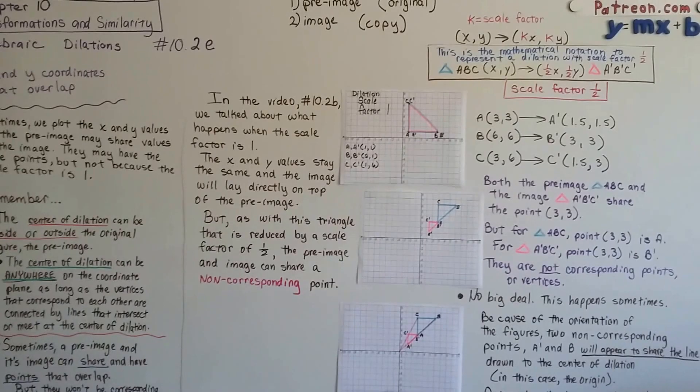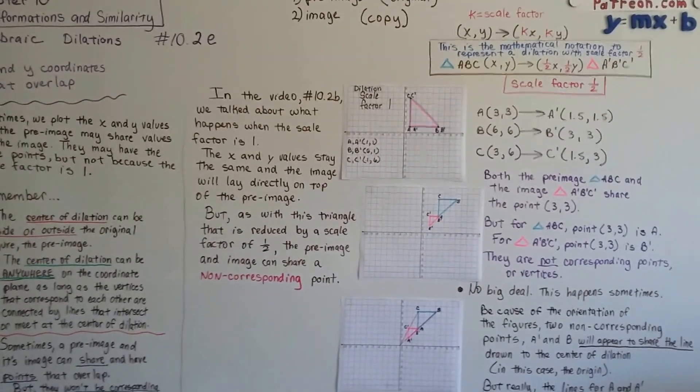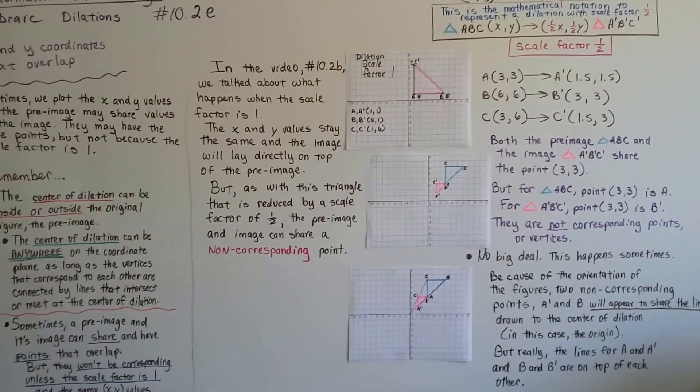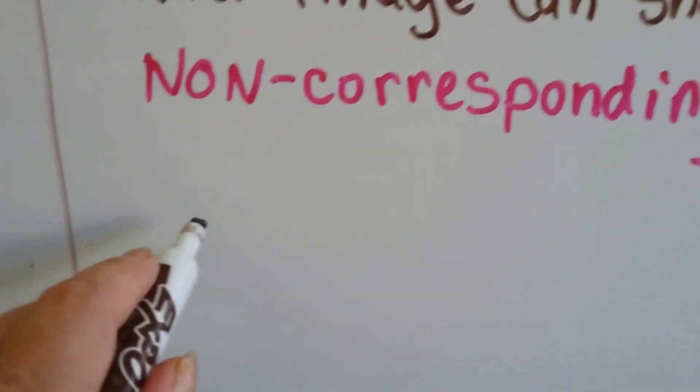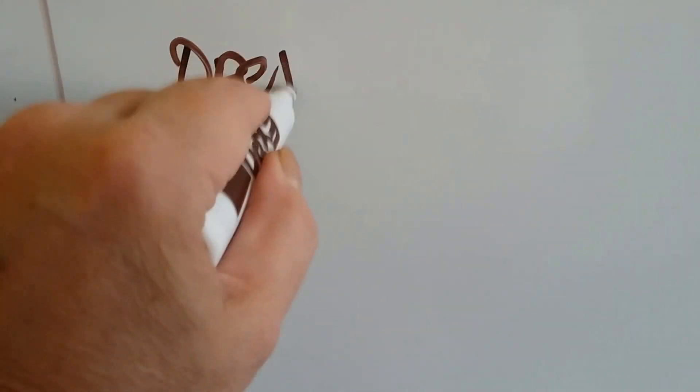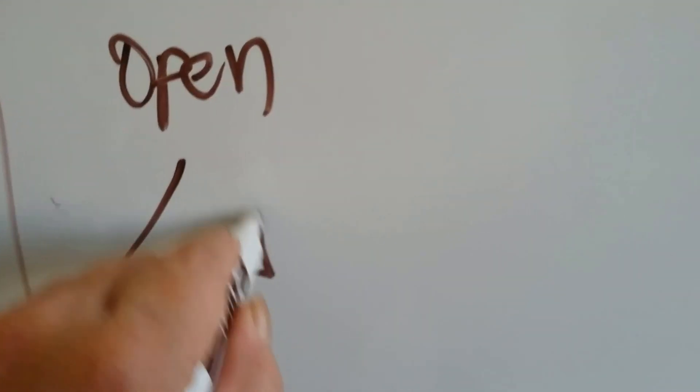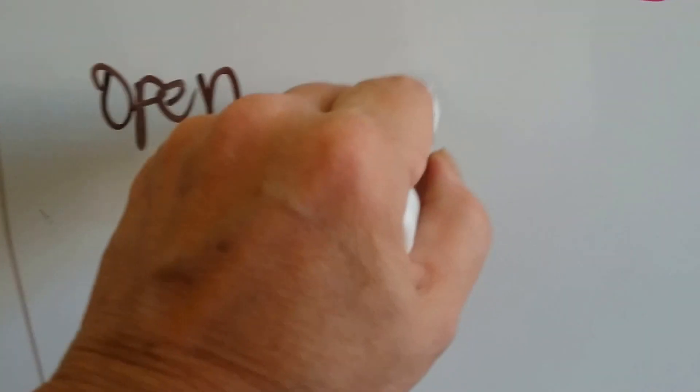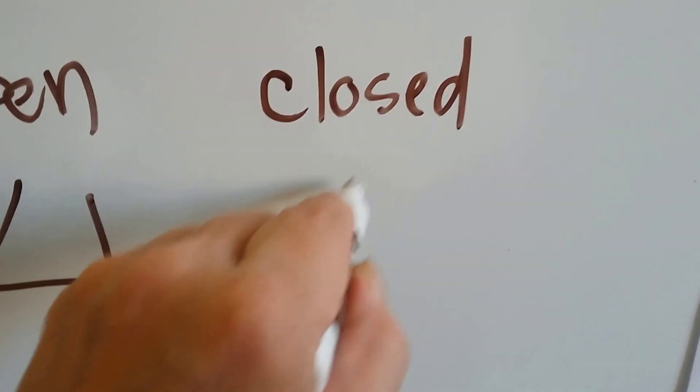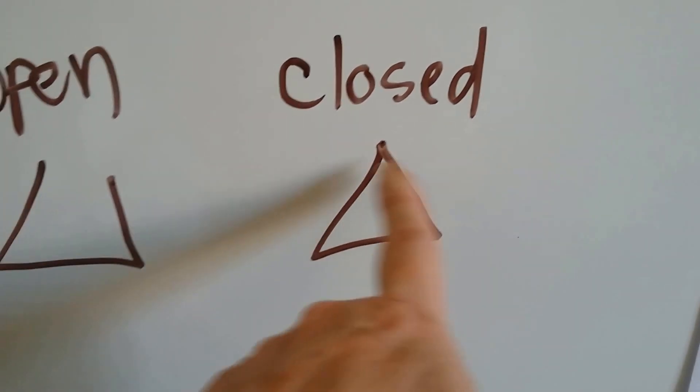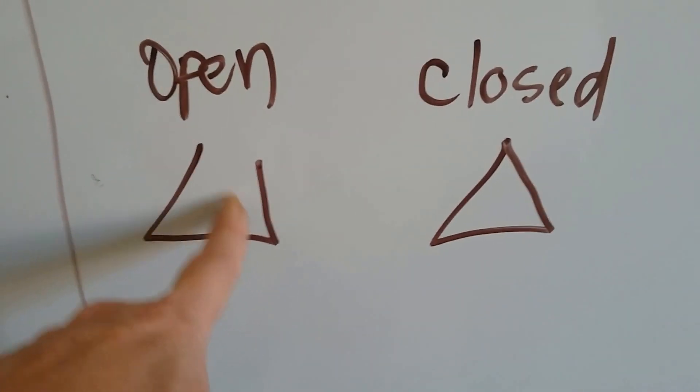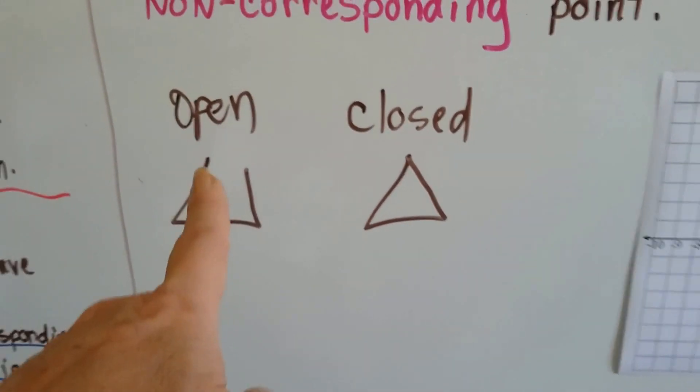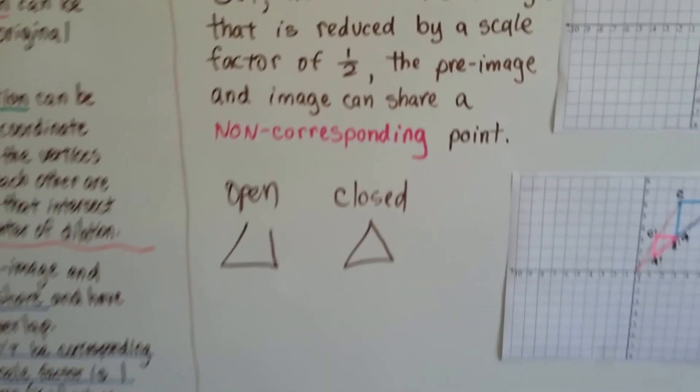Now in the next video 10.2f we're going to talk about dilations when a figure is an open figure. We've been doing closed figures. The difference between a closed figure and an open figure is an open figure would be like that - one of the sides is open. Closed figures, all the sides meet and you can't get in. If you were inside you'd be trapped; in this one you could get out. We're going to talk about doing dilations for open figures in 10.2f.